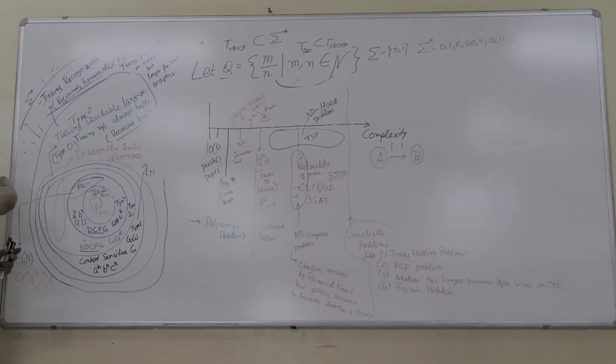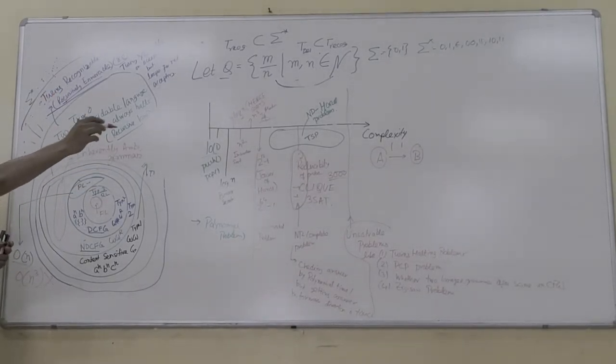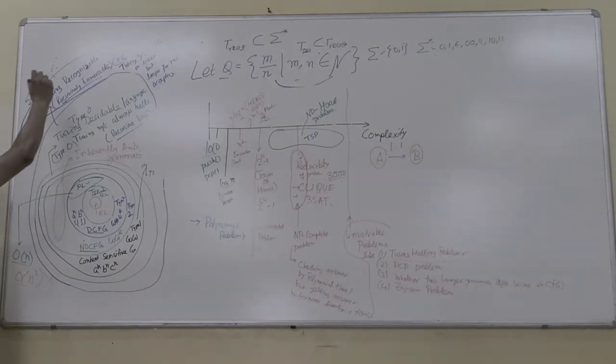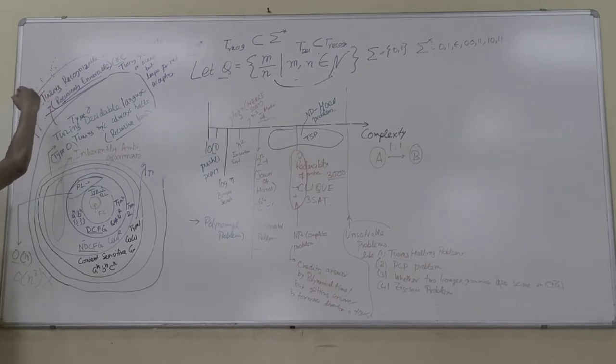All Turing machines, all Turing recognizable languages, we can map with natural numbers. You can number all Turing machines all over the world, giving them 1, 2, 3, 4, like this. This is countably infinite, but there are many other sequences like sigma star which you cannot enumerate.